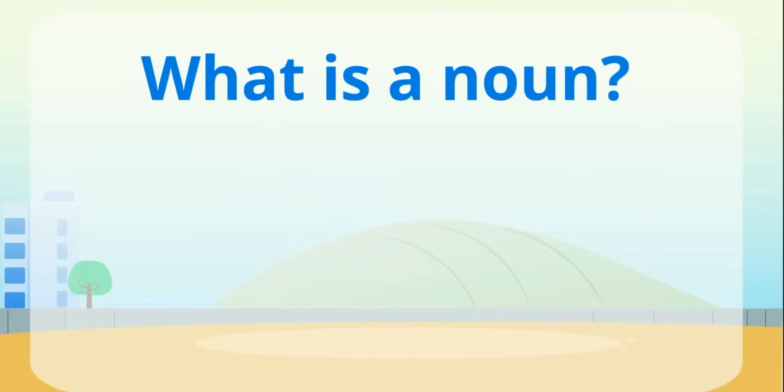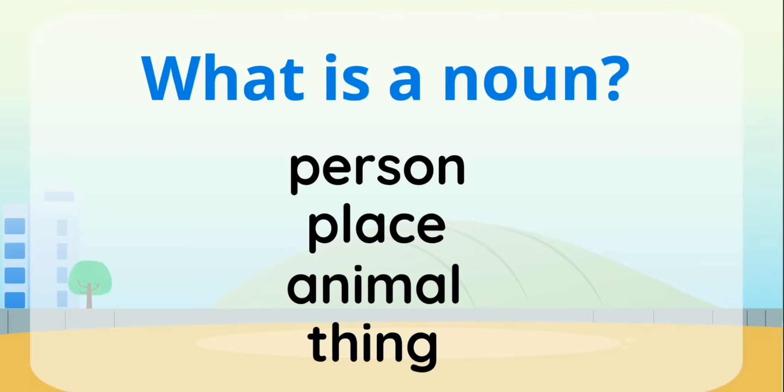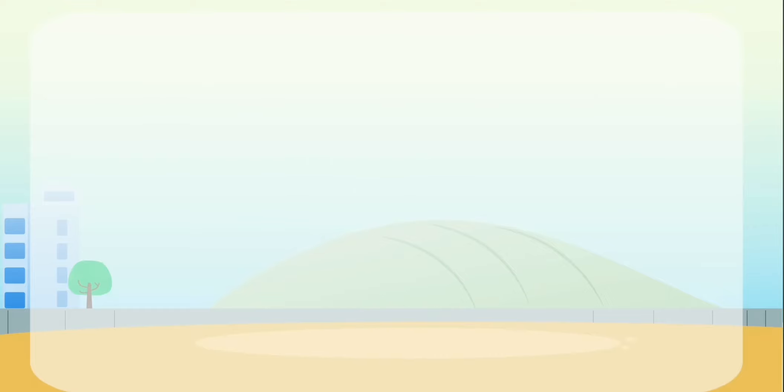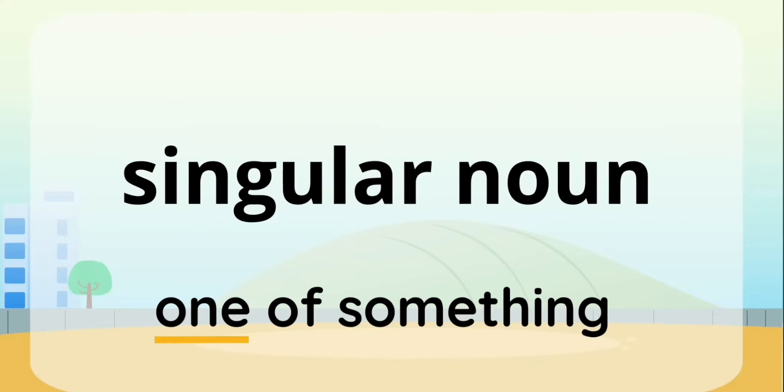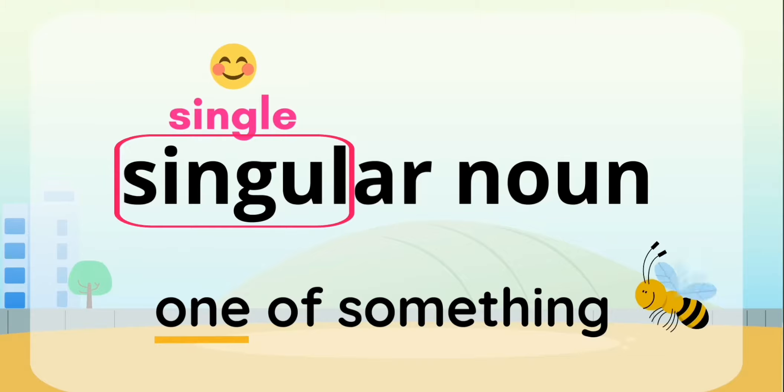First of all, do you remember what a noun is? A noun is a person, place, animal, or thing. Then what's a singular noun? A singular noun means that there is one of something. A good way to remember this is that the word singular has the word single in it, which means there's only one.